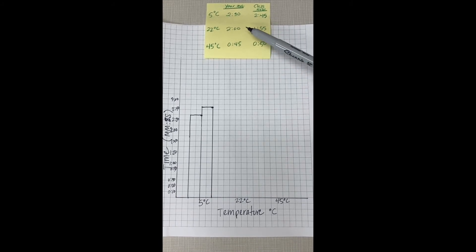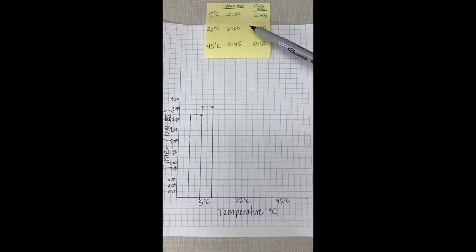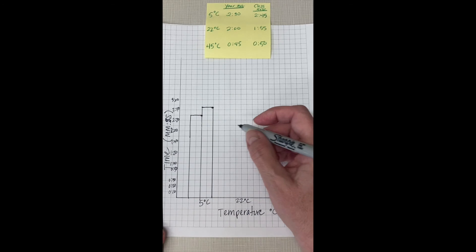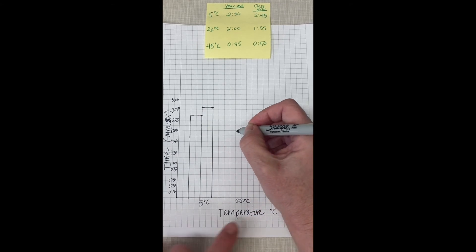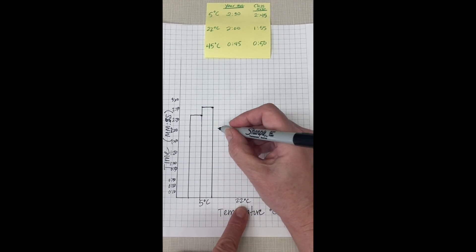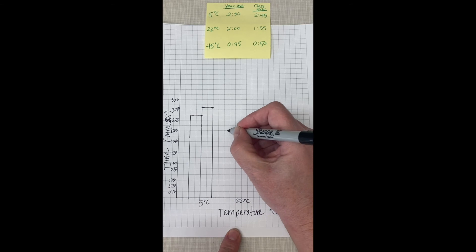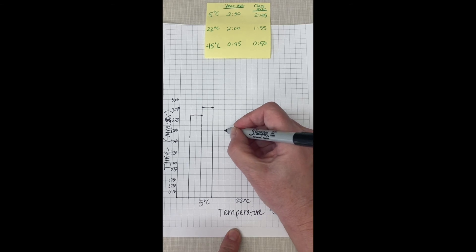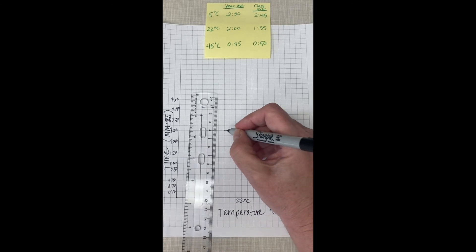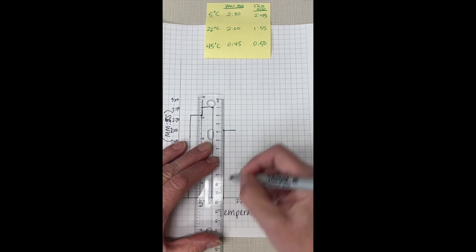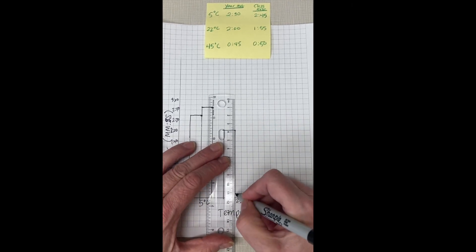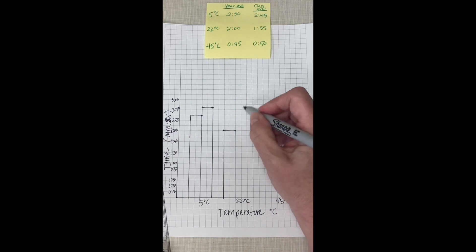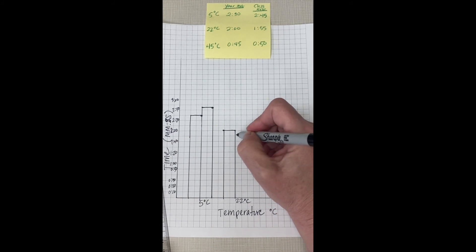So the next set of data for your data is two minutes and their class average was one minute and 45. So two minutes is right here and we're doing the 22 degrees C one. So right here. And then again, making sure that the graph is nice and tidy. Like that. The class average was one minute and 55 seconds, which would be right here.